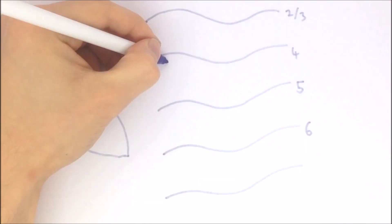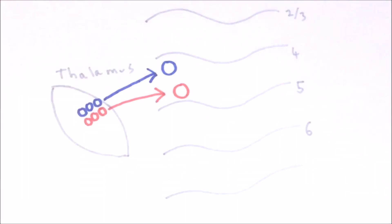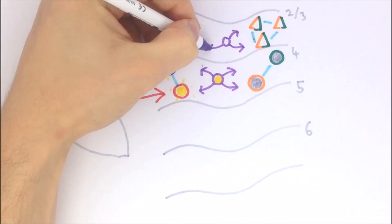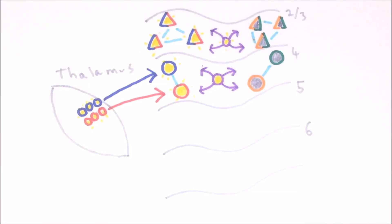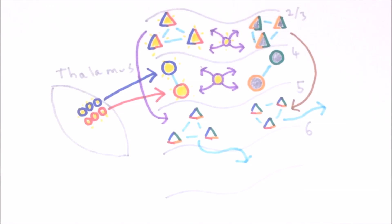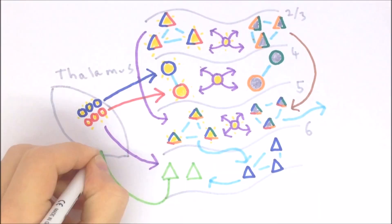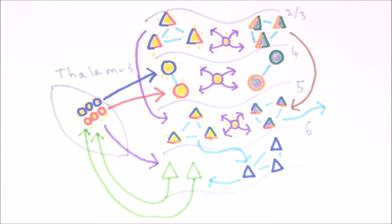To sum up: layer four neurons receive input from the thalamus in a specific pattern, and by connecting to neurons which respond to similar stimuli, they are able to amplify these patterns. Neurons in layers two and three combine inputs from layer four and form sub-networks where neurons with similar properties recurrently excite each other against a background of general inhibition. Layer five neurons integrate this information and form sub-networks based upon what they encode and where they send it. Layer six can use this information to provide feedback to the thalamus, forming a loop whereby an area of cortex is able to modulate its own input.